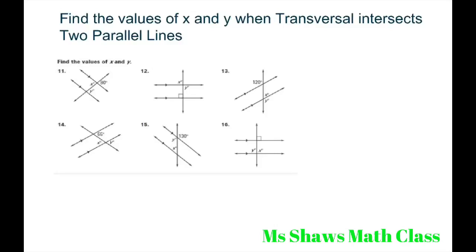Hi everyone. We're going to find the values of X and Y when a transversal intersects two parallel lines. These are parallel lines — it's given. If you see these little ticker marks with the arrows, that means the lines are parallel.